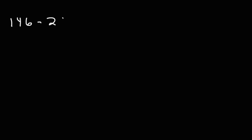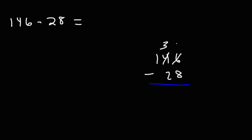Now let's move on to the next example. Let's subtract 146 by 28. The first number goes on top and the second number on the bottom. 6 minus 8 will give us a negative number, so we're going to borrow a 1 from 4. The 4 becomes 3, and we put the 1 next to the 6, transforming 6 into 16. So now we have 16 minus 8, which is 8. Then 3 minus 2 is 1, and 1 minus 0 is 1. So the answer is 118.